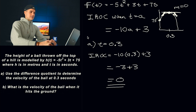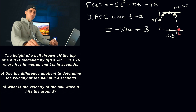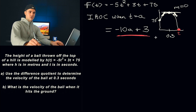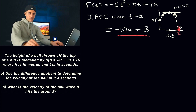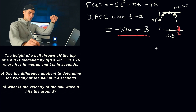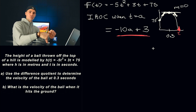In part B, they're asking for the velocity of the ball when it hits the ground. The first thing we need to do is find when it hits the ground — find that t value — and then plug it into our general expression to find the speed at which the ball hits the ground. We're finding the slope of the tangent right at that point.